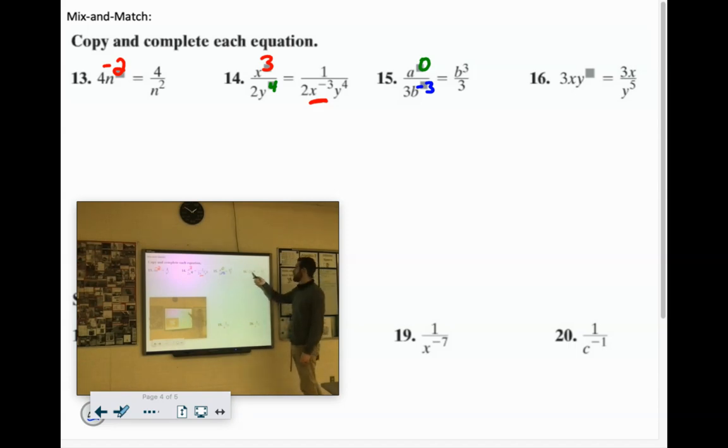Okay. The 3 and the X are still both up top. Y was up top, now it's on the bottom. Must mean it had a negative exponent. All right.